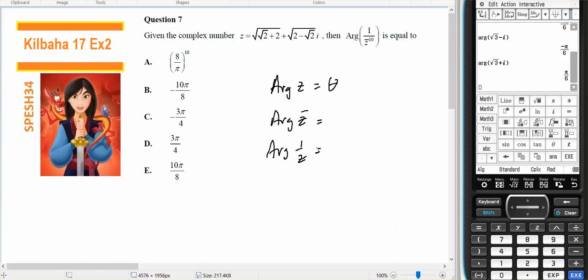This is for Year 12 Specialists, it comes out of Kilbaha 2017 Exam 2, Question Number 7. I've been given this complex number - this is the real part, that's the imaginary part. I need to find the argument of 1 over the conjugate of z to the power of 10.